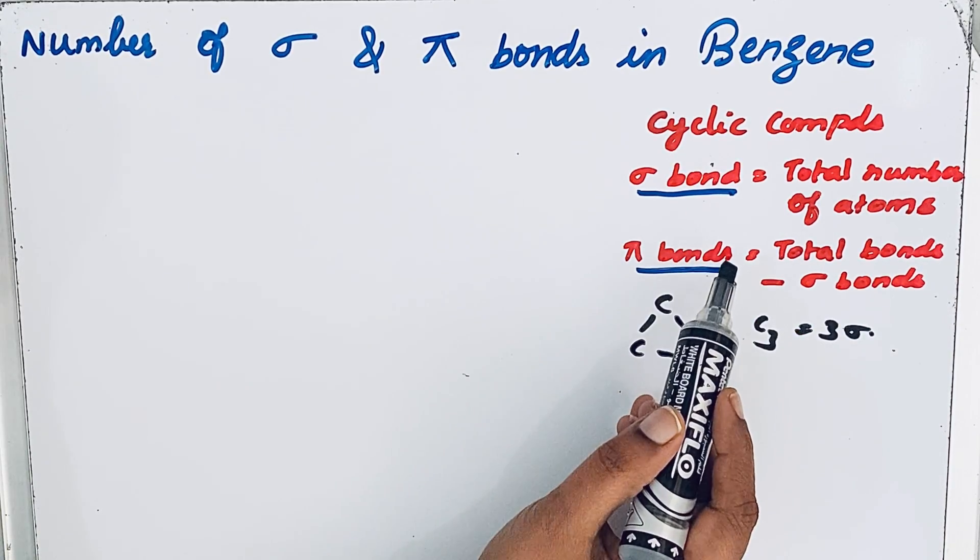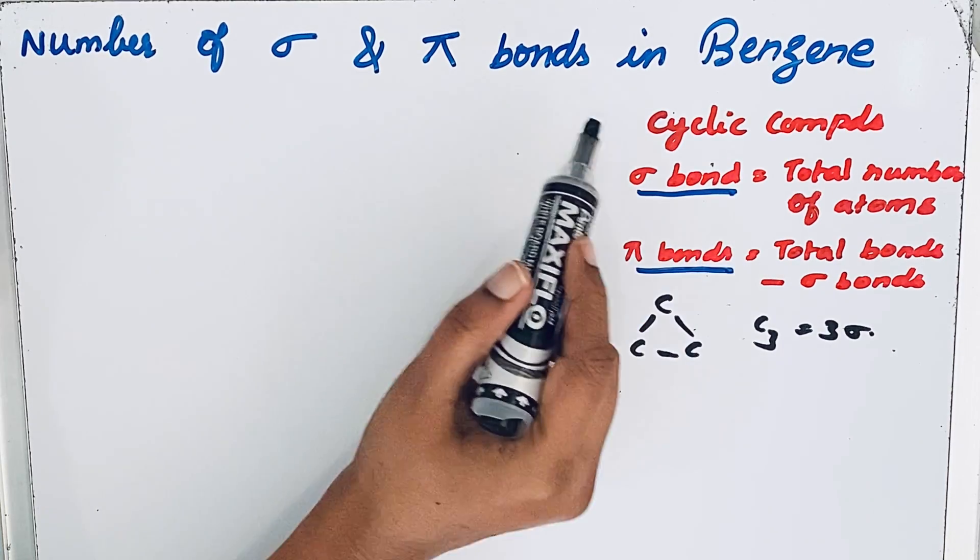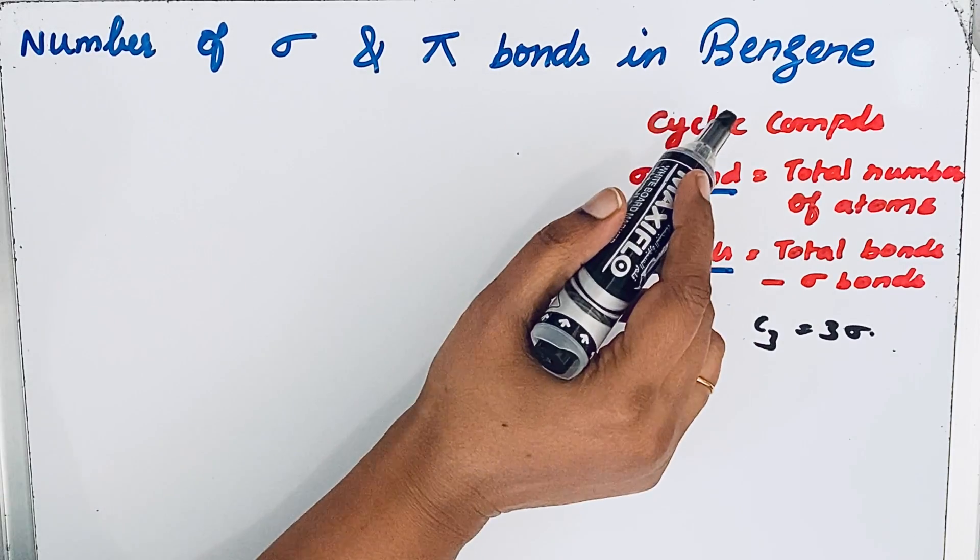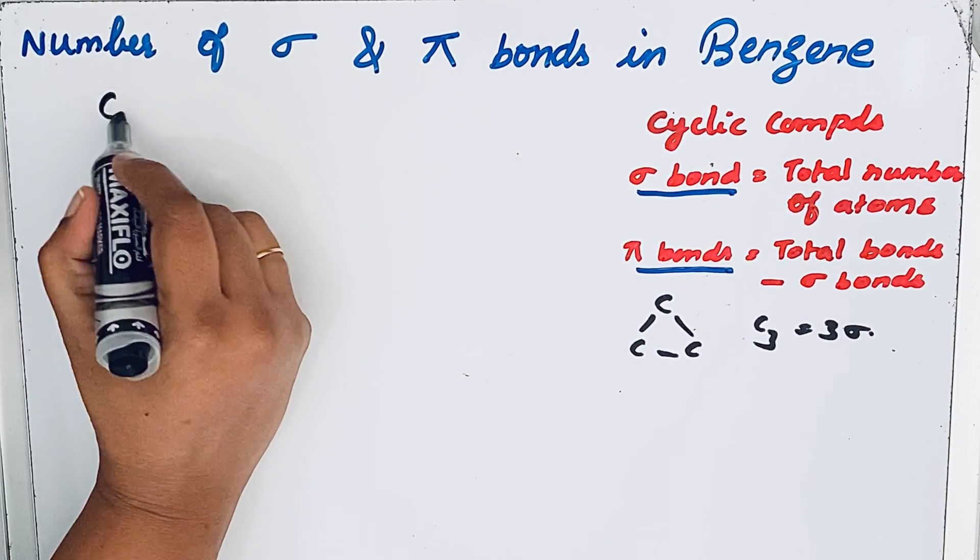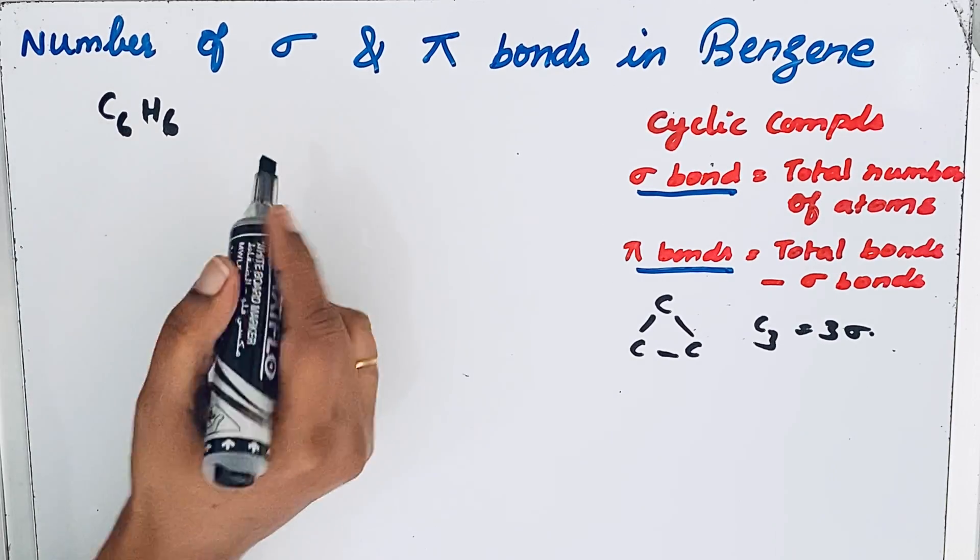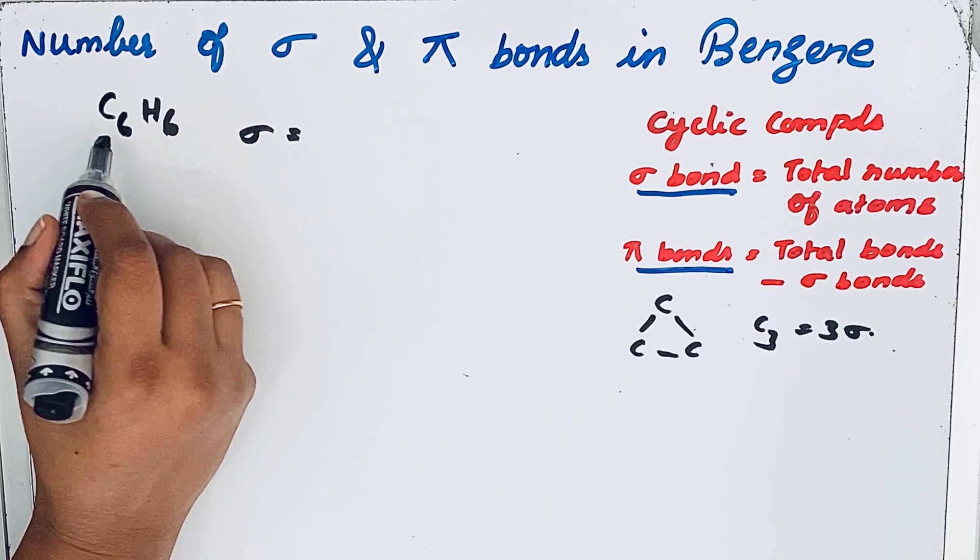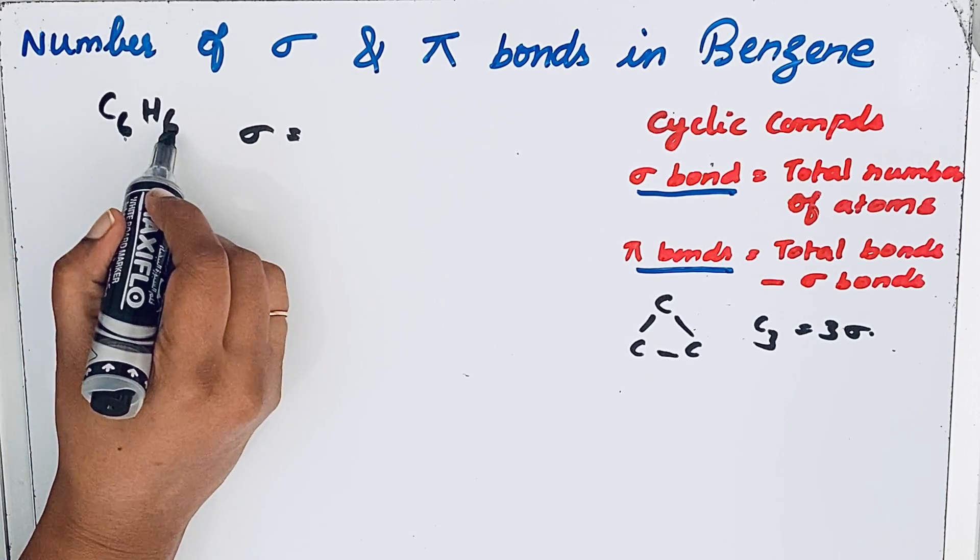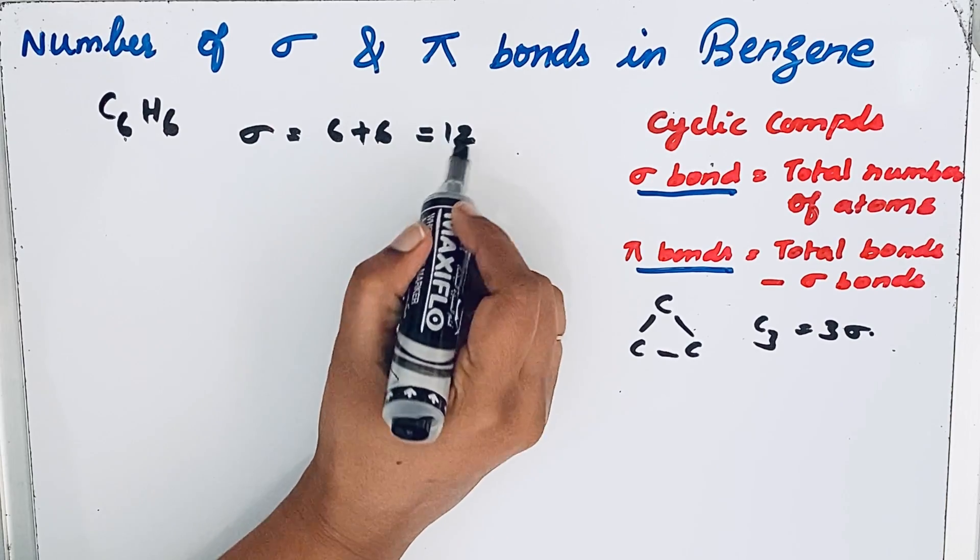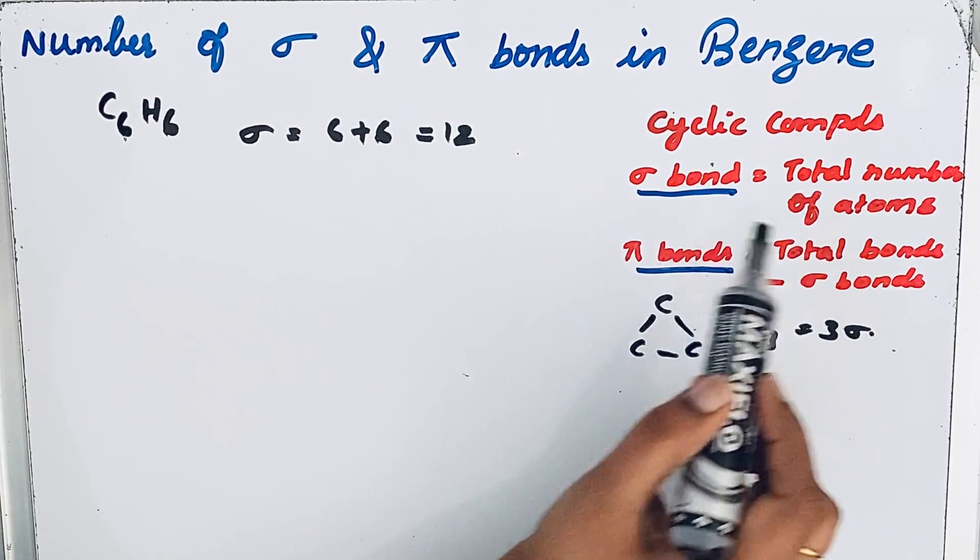Let us see how we apply this formula for finding sigma and pi bonds in benzene. Benzene chemical formula is C6H6. From this we can find the total number of atoms. For sigma bonds, total number of atoms: carbon 6, hydrogen 6. 6 plus 6, we get 12. For cyclic compounds, sigma bonds equal total number of atoms.